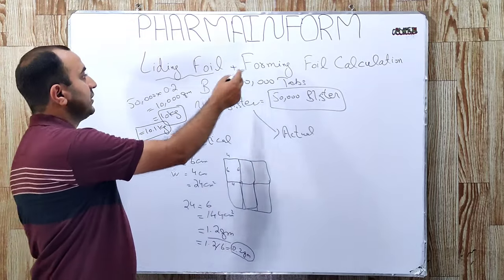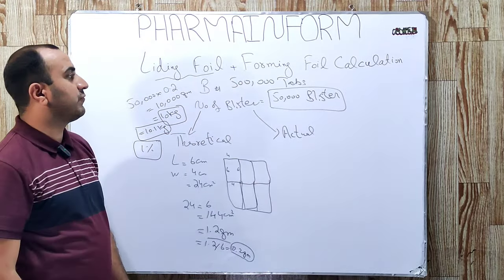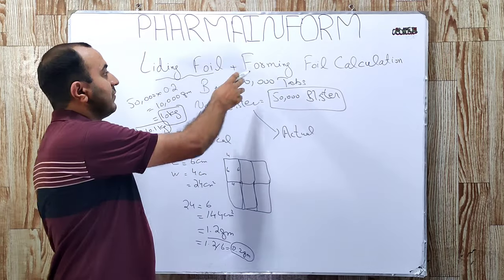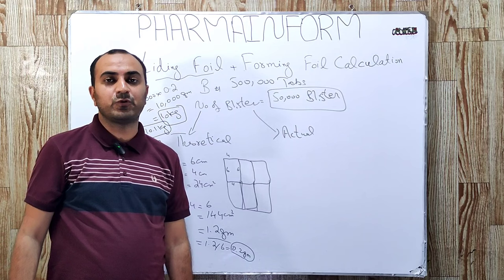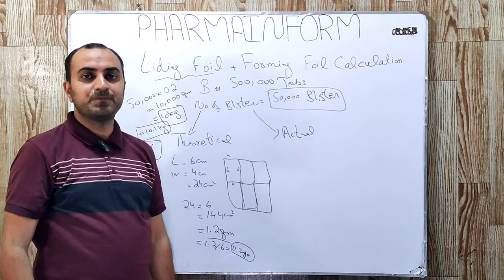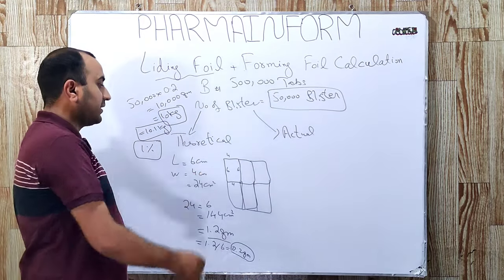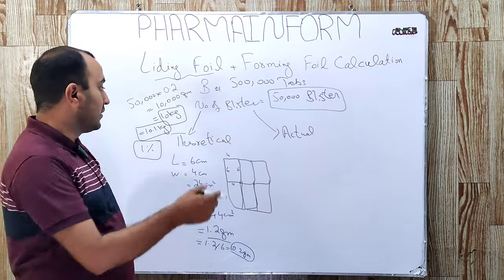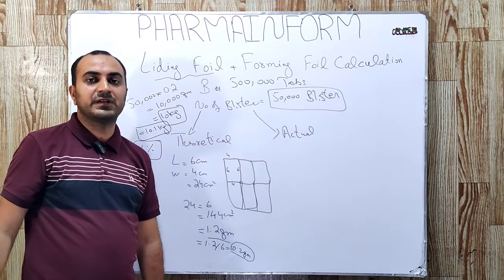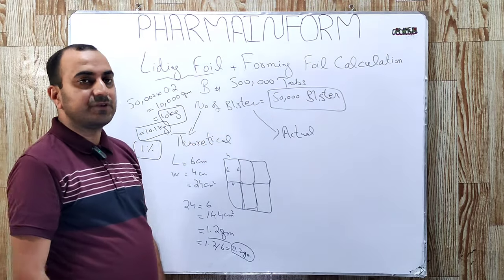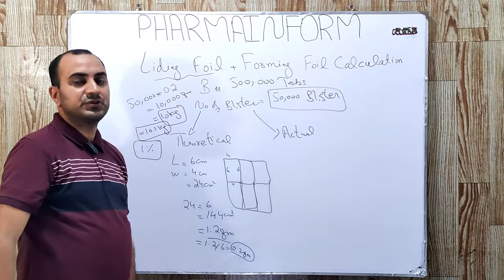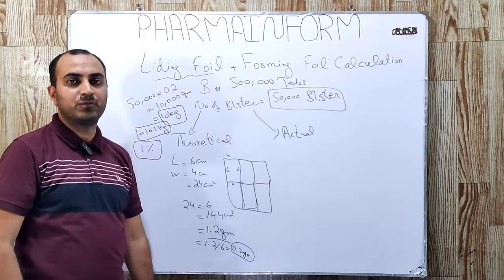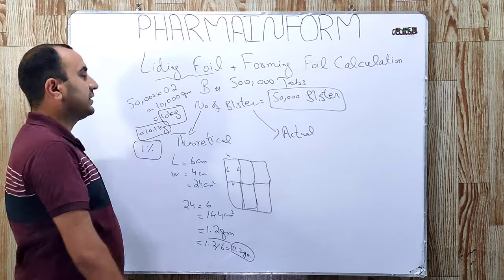In the same way, you will calculate the weight of forming foil. You take the dimensions of one blister for the forming foil — whether PVC, PVDC, or aluminum foil — and take measurements for 6 or 10 blisters depending on feasibility. Calculate the average weight, find the weight for one blister, and in the same way you can calculate the total weight of forming foil required for blistering 50,000 blisters.